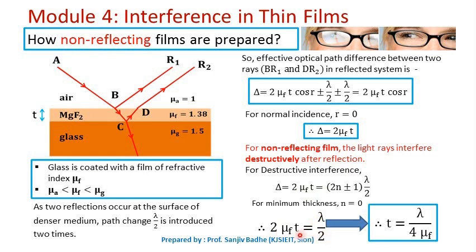Solving for thickness, we take 2μ_f to the other side, and the minimum thickness t of the MgF₂ film coated on the glass surface is t = λ/(4μ_f). So, to get a non-reflecting film on the glass surface, the glass must be coated with a transparent material having refractive index greater than air and less than glass, and the thickness must be adjusted to λ/(4μ_f).